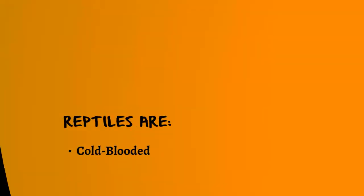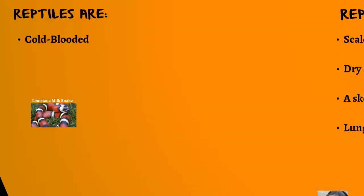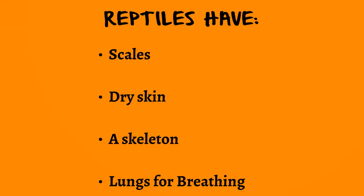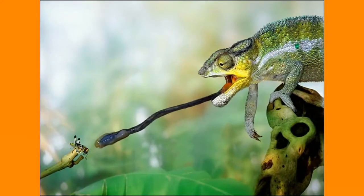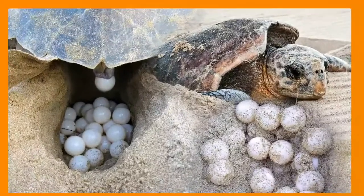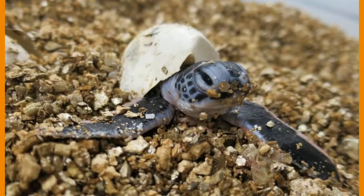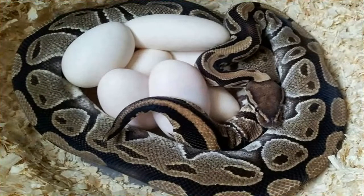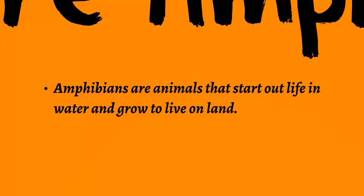Reptiles are animals that have either scales or bony plates on the outside of their body. Reptiles are also cold-blooded. This is a Louisiana milk snake — you wouldn't find that around here in New York. Reptiles have scales, dry skin, a skeleton, and lungs for breathing. Examples include an alligator and a chameleon, which changes colors and can stick out its tongue to catch a fly or insect. Reptiles can usually lay eggs — this is a turtle producing many round eggs, which are buried in the sand for protection. This is a baby turtle that has just hatched, and here is a snake guarding her eggs.